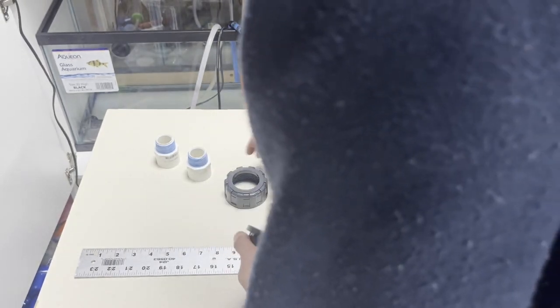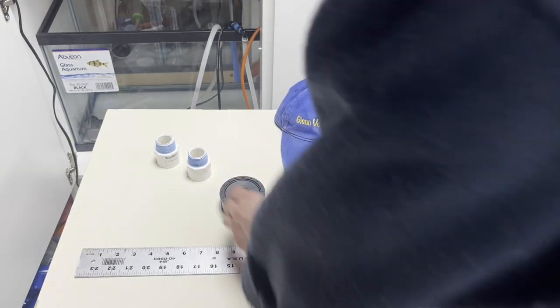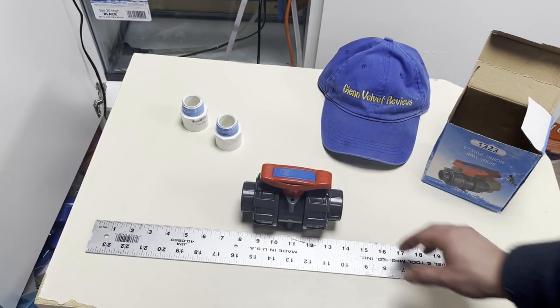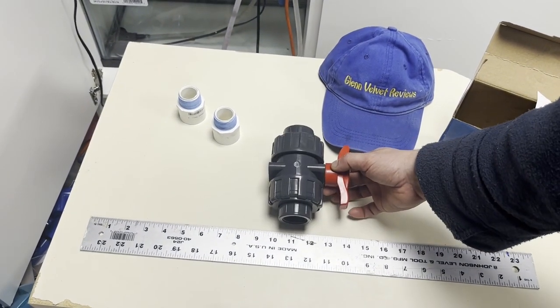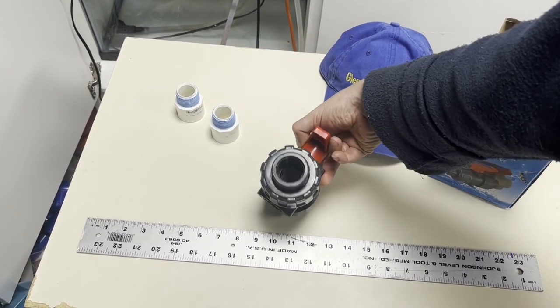So that's pretty much the unboxing. This is the size of it right here that you can expect it to look like, and that's about the size of it in length. So you guys can kind of see what's up on there on that end and get an idea of the size.